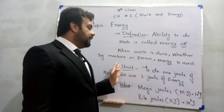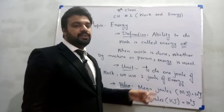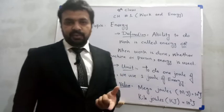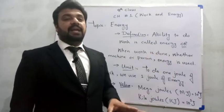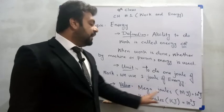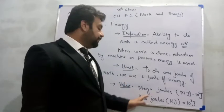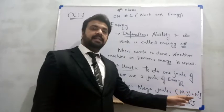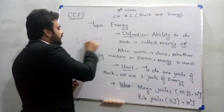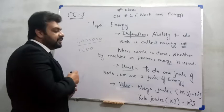Energy کا کوئی الگ formula نہیں ہے — اسے work کے لیے ہی define کیا جاتا ہے۔ Energy کا unit بھی joules ہے: one joule of work کرتے ہوئے آپ جتنی energy استعمال کرتے ہیں وہ بھی one joule ہوتی ہے۔ جب energy کی مقدار زیادہ ہو تو megajoule (MJ = 10⁶ joules) یا kilojoule (kJ = 10³ joules) استعمال کرتے ہیں۔